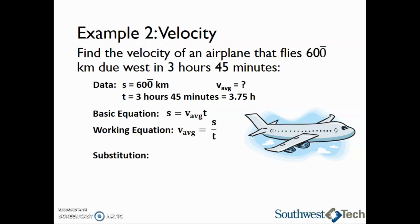Next, we can substitute in 600 kilometers for s and 3.75 hours for t. When we divide, we end up with 160 kilometers per hour due west for our average velocity. Make sure you indicate the zero on 160 is significant, because our answer needs three significant digits. Also, since we are finding velocity and it is a vector, we need to specify the direction, which is west in this case.